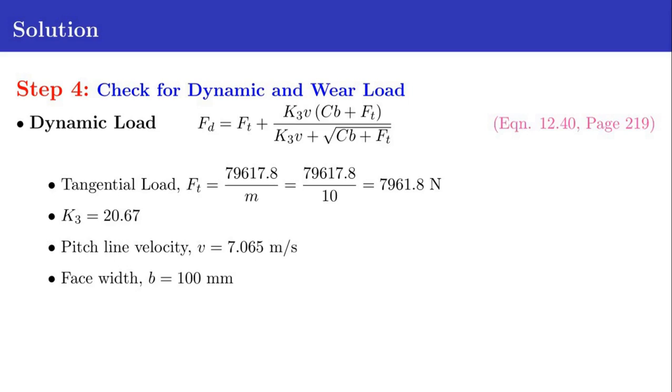Now in step 3 we check for dynamic and wear loads. First we calculate the dynamic load FD equals FT plus (21 V times b plus FT) divided by (21 V plus square root of b plus FT), equation 12.40 in page 219. The tangential load FT is 79,617.8 divided by M, which we have already found. M is 10, so FT equals 7961.8 Newton.